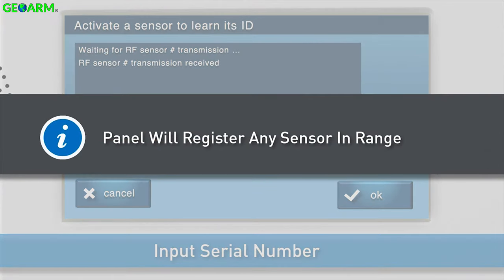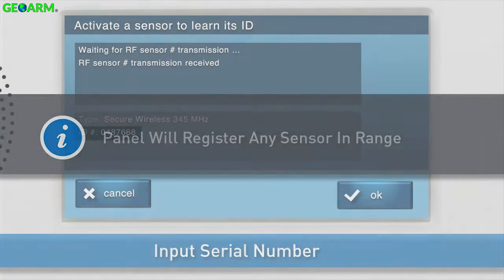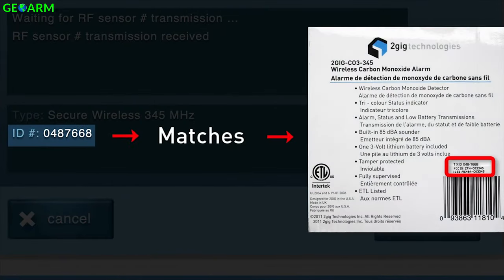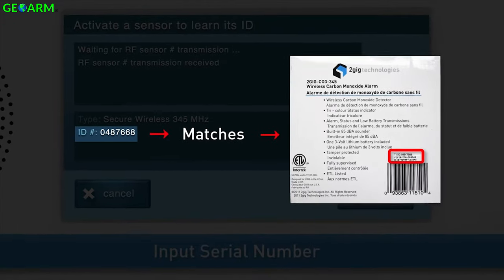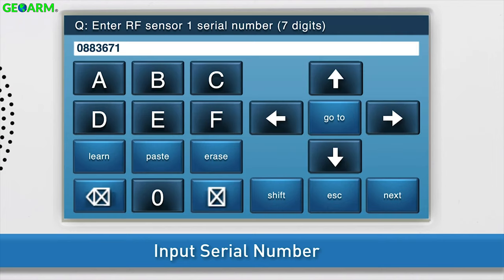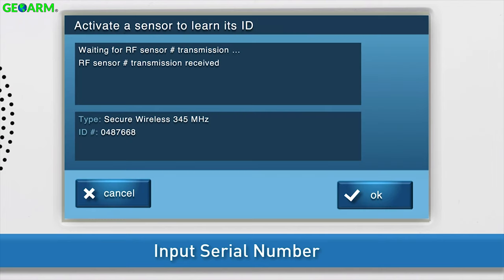Note, the panel will register any sensor within range, so you will need to make sure the ID number shown on screen matches the serial number, or TXID, of the carbon monoxide detector you are adding. If the ID numbers do not match, press LEARN once more and trigger the detector again. Press OK as soon as the correct ID number displays on screen.